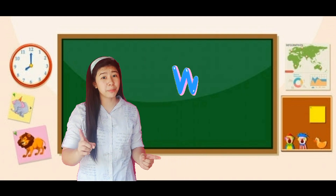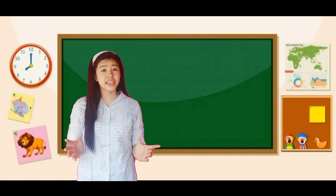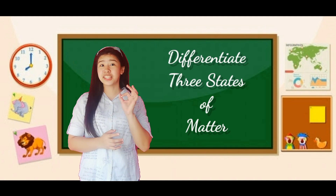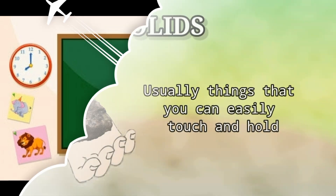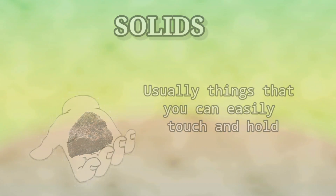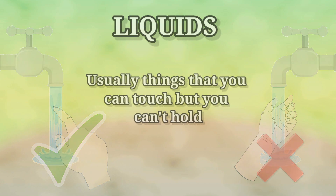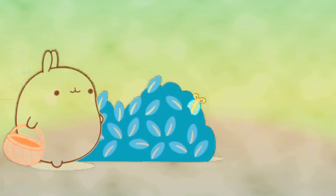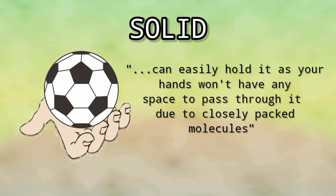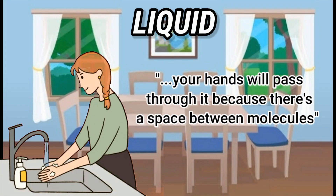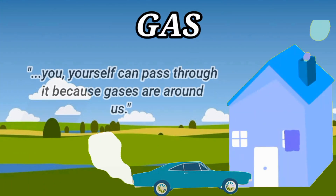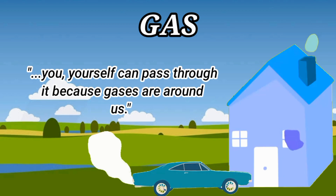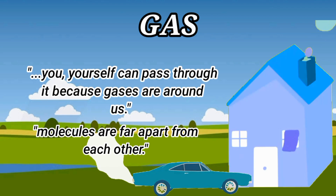I'm so glad with your performance and participation. It seems that you really understand our topic. Now let us differentiate the three states of matter. Solid objects are usually things you can easily touch and hold with your hands. In liquid, you can touch it but you can't hold it. And in gas, you can feel it but you cannot touch it nor hold it. The reason behind this: in solid objects, your hands won't have any space to pass through due to closely packed molecules. In liquid, your hands will pass through it because there's space between molecules. And in gas, you can easily pass through it because their molecules are far apart from each other.